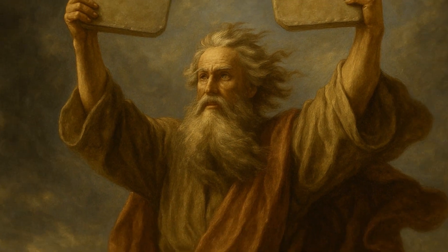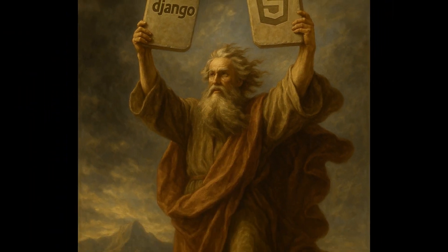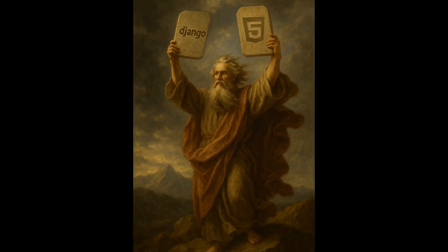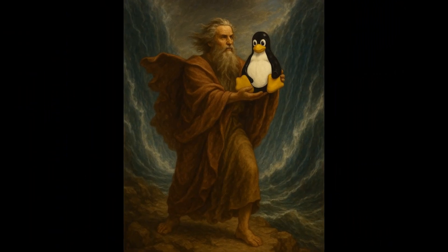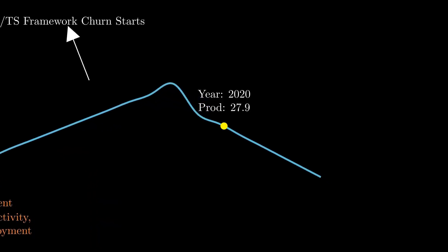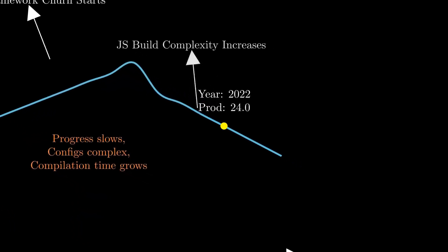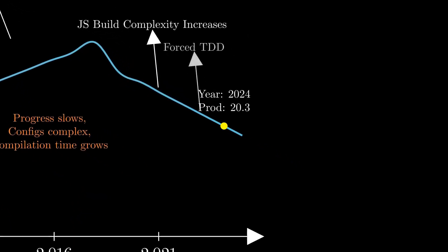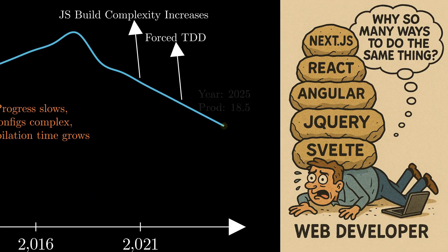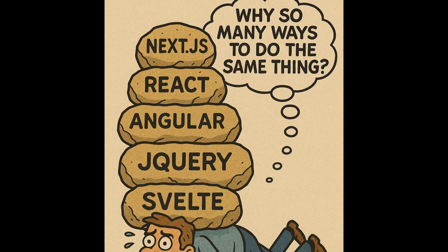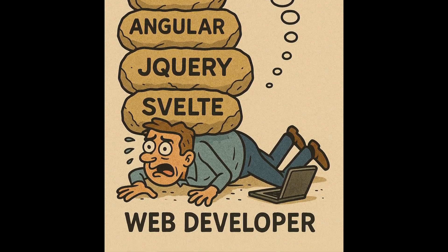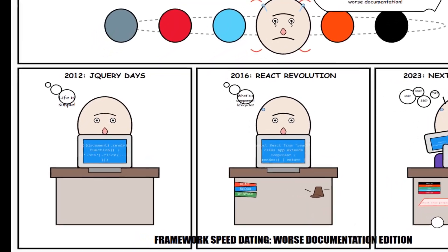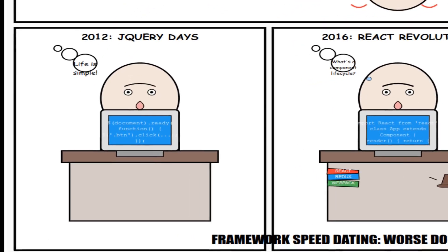For frontend, I leaned on Django templates and web standards. No drama, no problem. Then the frameworks arrived. Suddenly I had to keep switching contexts — from jQuery, to Angular, to Angular 2, then React, then Svelte, then Next.js. Like speed dating, but with worse documentation.